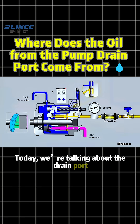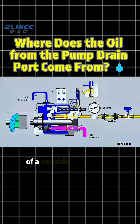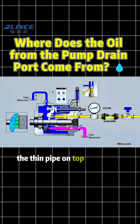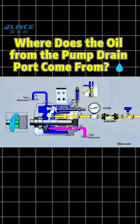Today, we're talking about the drain port of a variable piston pump — the thin pipe on top that sends oil back to the tank. Where does this oil come from?